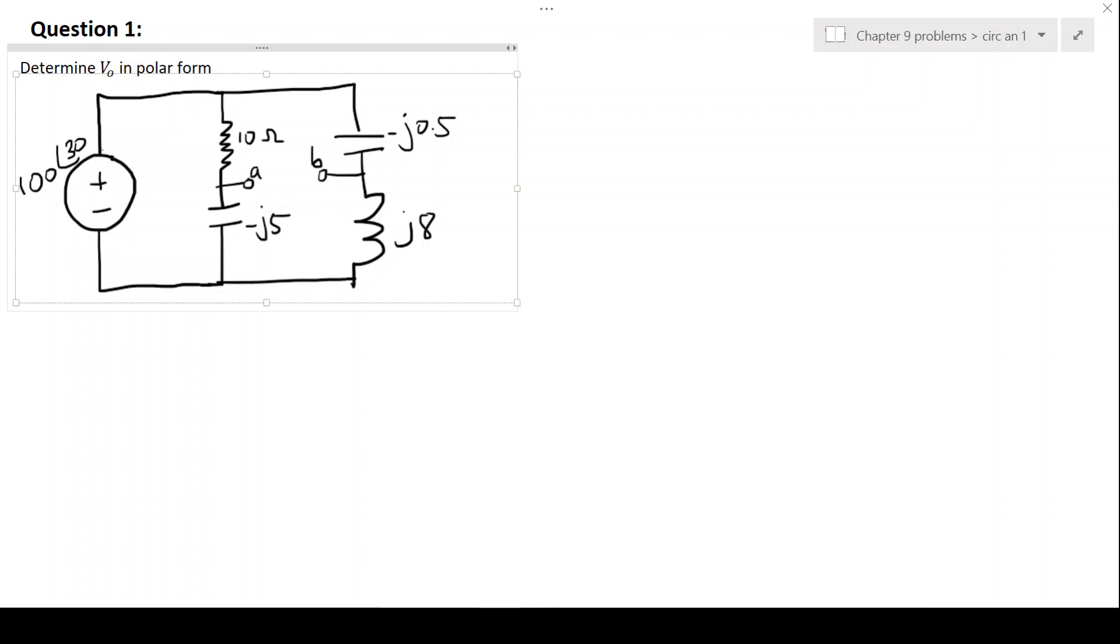Hello everyone and welcome to this example recording on circuit analysis. In this circuit we are requested to determine the voltage V0, and the voltage V0 is effectively the voltage from point A to point B.